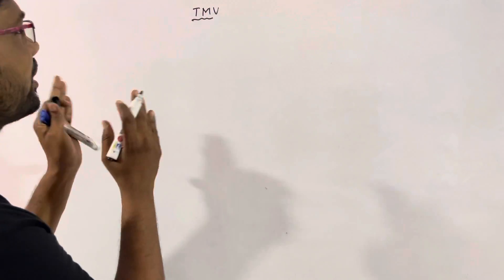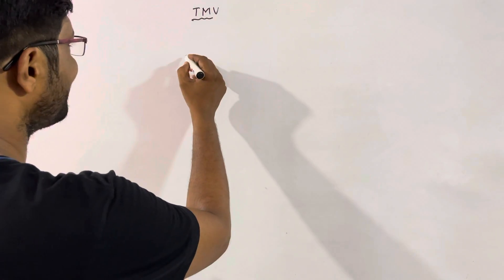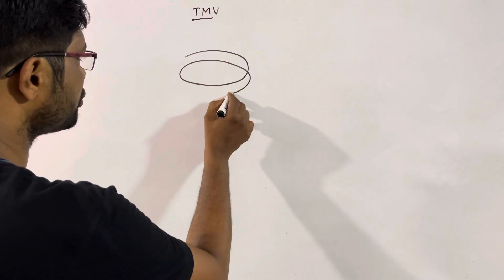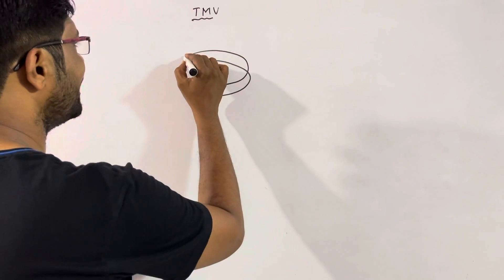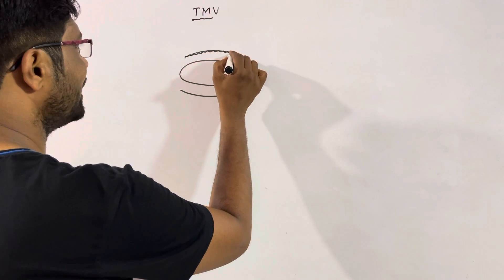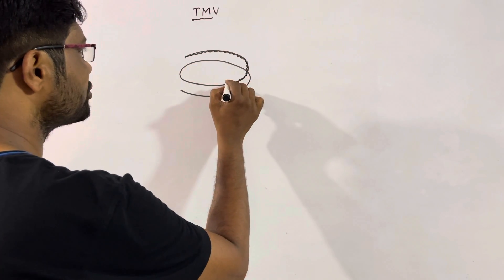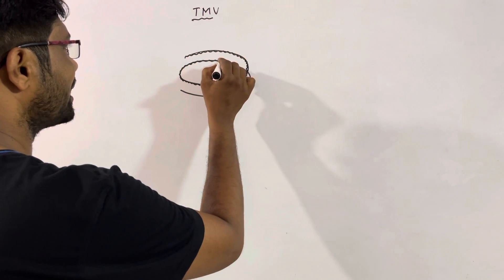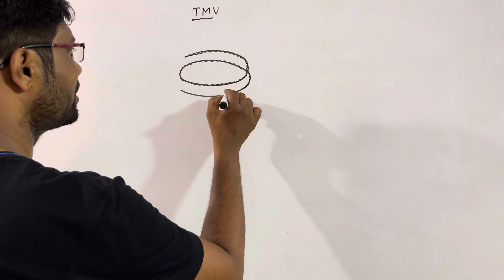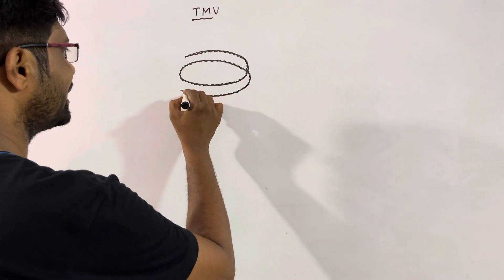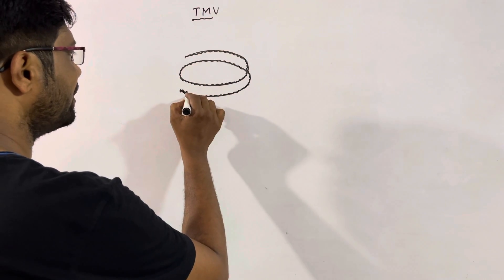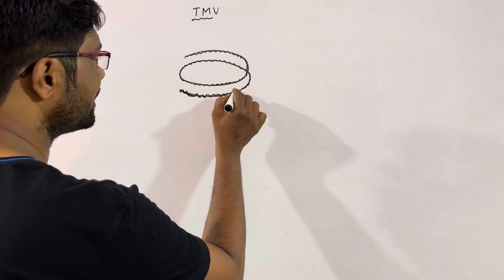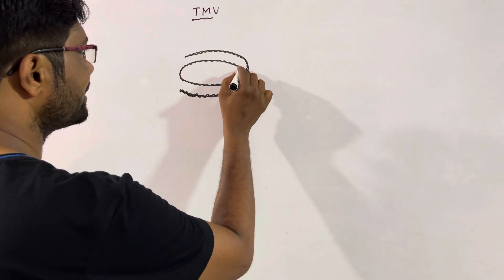First of all, in the Tobacco Mosaic Virus, we are talking about the Nucleic acid. We are taking a small amount of Nucleic acid and showing how the Nucleic acid is formed. So we will see the structure and everything together.